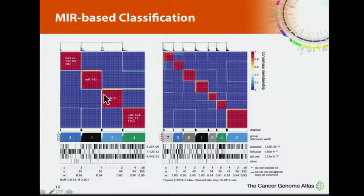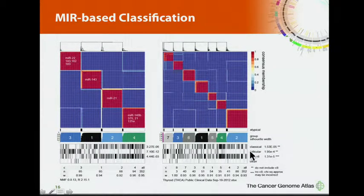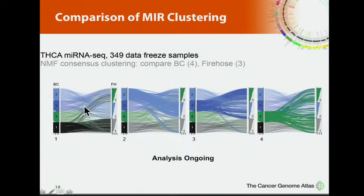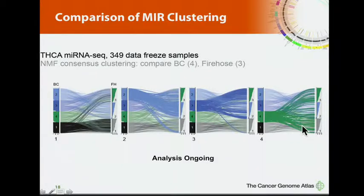For microRNAs, we can use various tools to cluster these. Here's a cluster driven by MIR-21. We can get four types or seven types. The four-type clustering shows correlation to histologic type, which we know reflects genotype — so the microRNAs will fit in nicely. Comparing the British Columbia software versus Firehose, you can generate different clustering algorithms and compare them head-to-head. Four groups versus three — some cohorts line up nicely, and others get scattered. We have some work to do to figure out the most meaningful way to look at the microRNA data globally, but there's clearly useful data in there.